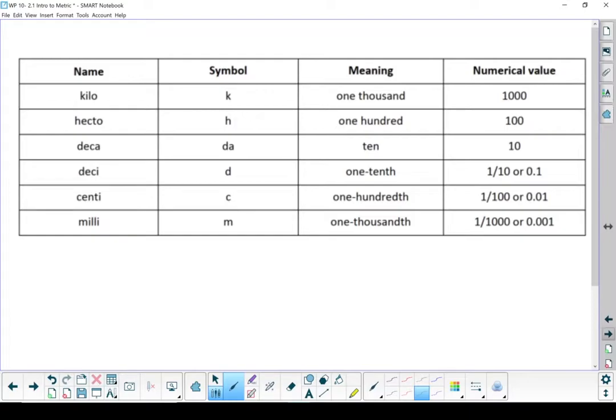Kilo means a thousand. So if we have a kilometer, that's a thousand meters. Hecto is a hundred. That symbol is an H. There are a hundred meters in a hectometer. Deca means ten. So if I've got a decaliter, that means I've got ten liters.